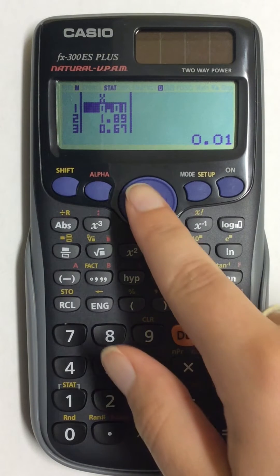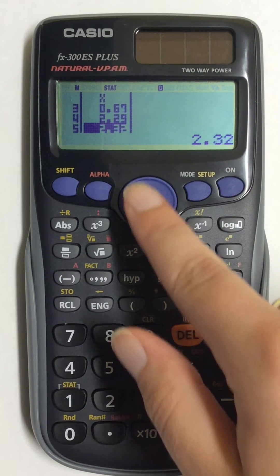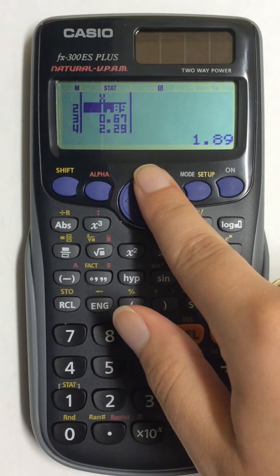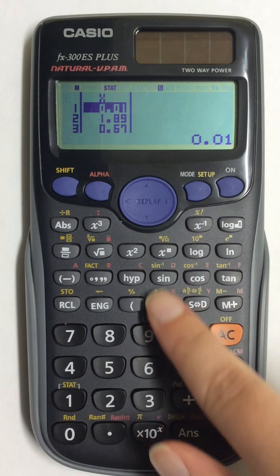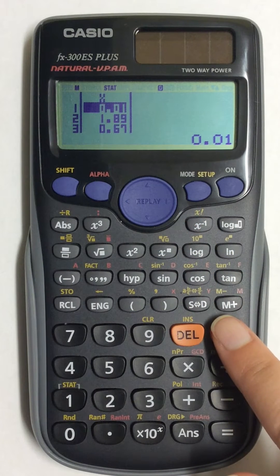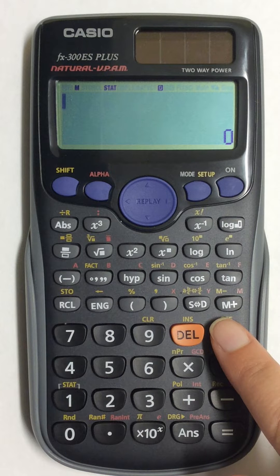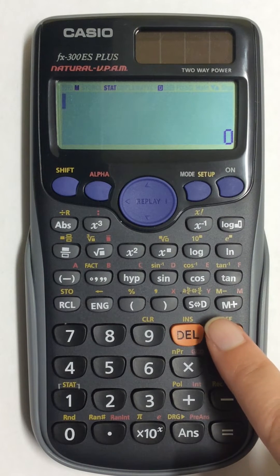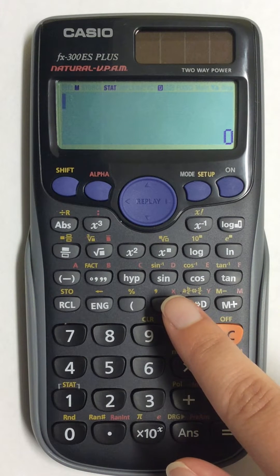I already have a list of numbers programmed into my calculator, so to start I'm going to press AC. This will keep and save all of my numbers in my calculator.